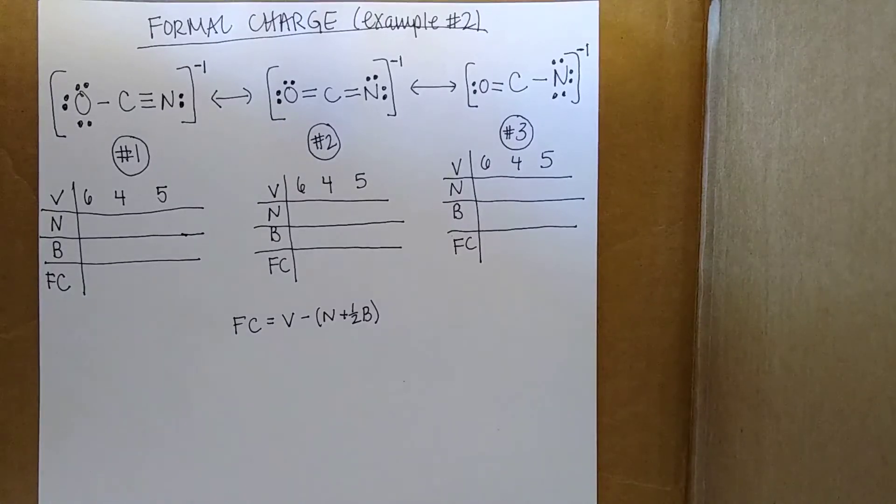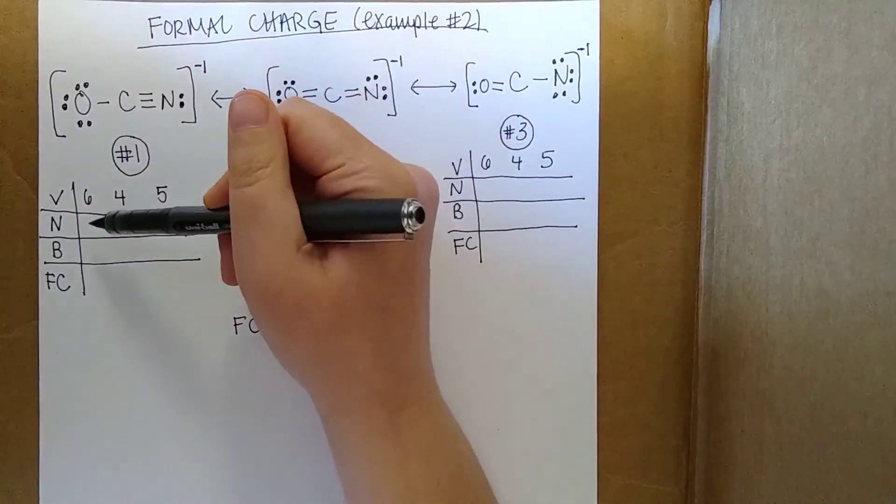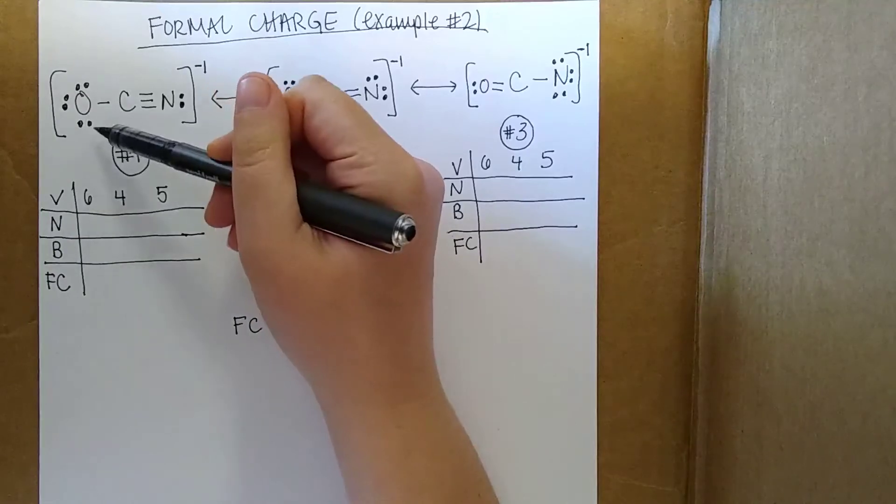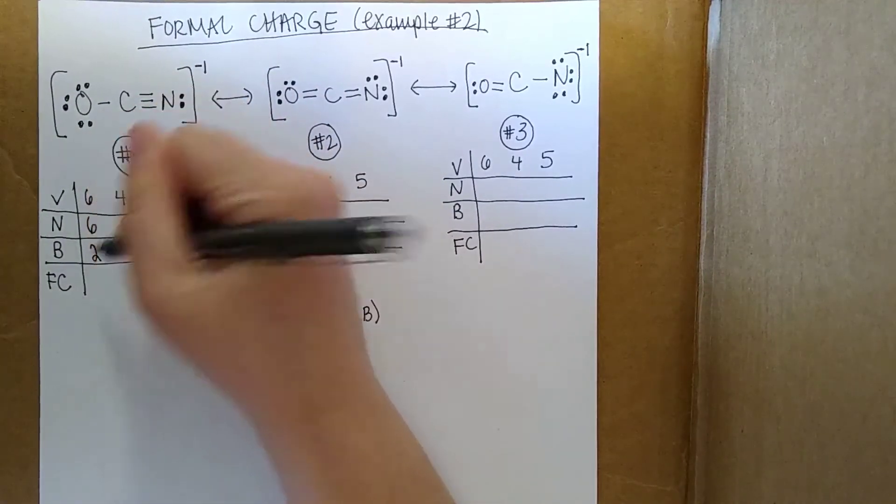Let's do what we did last time and look at the structures and determine the number of non-bonded electrons and bonding electrons, and then compute the formal charges for each one of these cases. Let's start with number one. The number of non-bonded electrons in this oxygen here is 6, and the number of bonded electrons is 2.